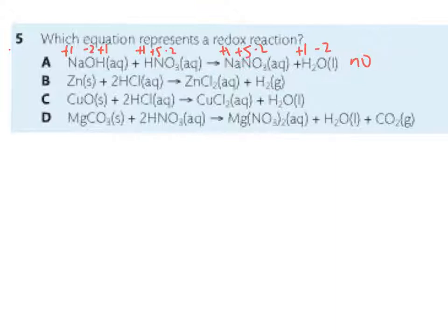In B, I've got zinc in its elemental state, so it's got a charge of zero, hydrogen is plus one, and Cl is minus one. Over here, Cl is still minus one, which forces zinc to be plus two, so zinc has changed here. It's lost electrons or become oxidized, and hydrogen has also gone to its elemental state and been reduced. So yes, this one does show redox.